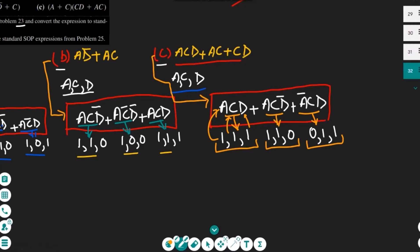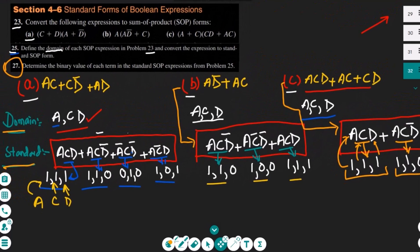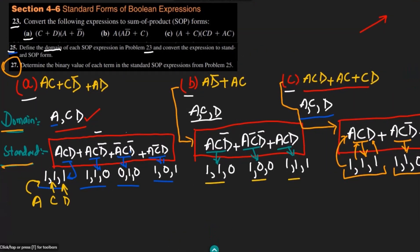These are basically the binary values which we had to find out in order to satisfy the SOP which are given here. In the standardized SOPs, these are the binary values which will give me output equal to 1 if any of them will be satisfied.